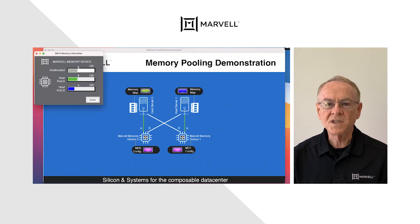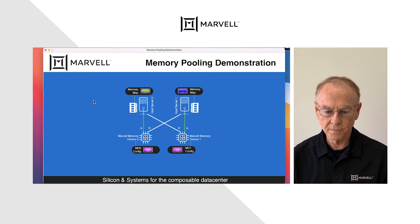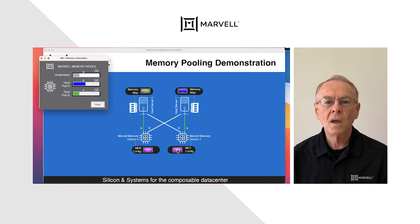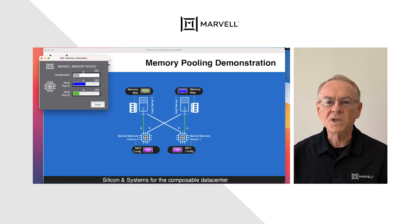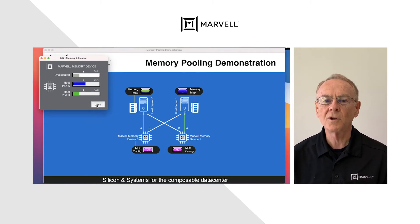Memory device zero, or MD zero, is providing six gigabytes of memory to host zero and four gigabytes of memory to host one, with six gigabytes unallocated. MD one is providing four gigabytes of memory to host zero and eight gigabytes of memory to host one, with four gigabytes unallocated.